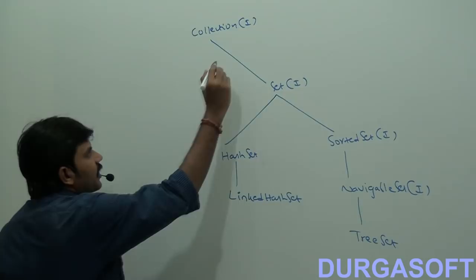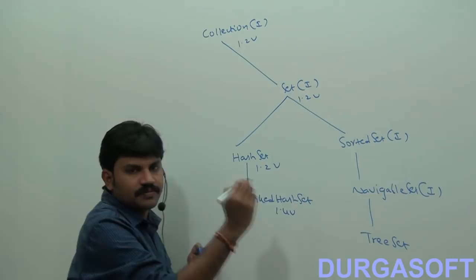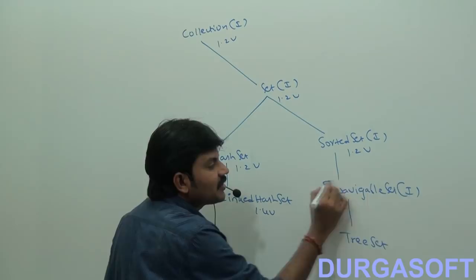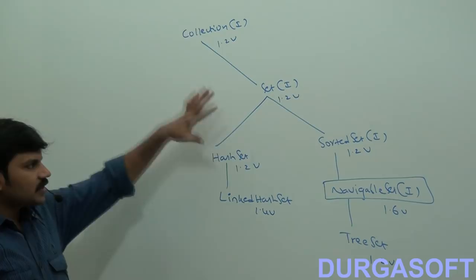Collection came in version 1.2. LinkedHashSet came in version 1.4. SortedSet came in 1.2. NavigableSet is a newly added thing in version 1.6. TreeSet came in version 1.2.